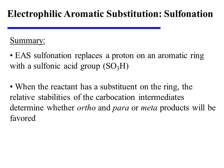In summary, EAS sulfonation replaces a proton on an aromatic ring with a sulfonic acid group. When the reactant has a substituent on the ring, the relative stabilities of the carbocation intermediates determine whether ortho and para or meta products will be favored.